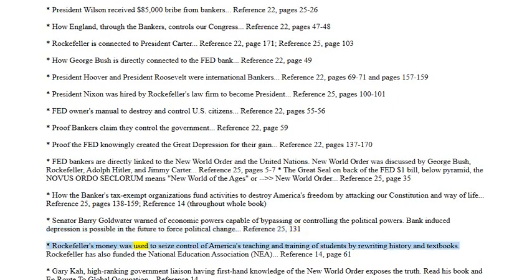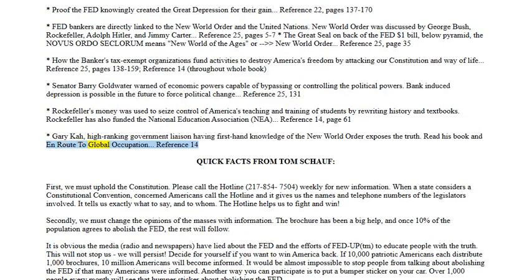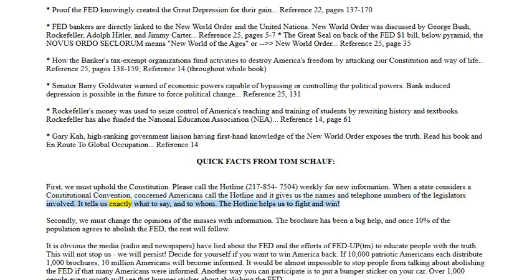Rockefeller's money was used to seize control of America's teaching and training of students by rewriting history and textbooks — Rockefeller has also funded the National Education Association (NEA). Gary Carr, a high-ranking government liaison with first-hand knowledge of the New World Order, exposes the truth in his book En Route to Global Occupation. Quick facts from Tom Schauf: first, we must uphold the Constitution — please call the hotline at 217-854-7504 weekly for new information. When a state considers a constitutional convention, the hotline gives us the names and telephone numbers of legislators involved and tells us exactly what to say and to whom.